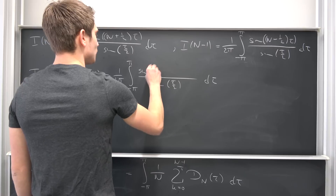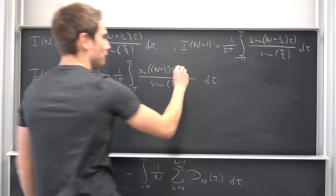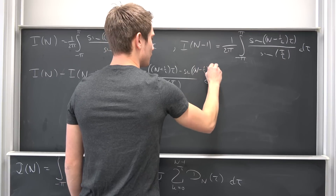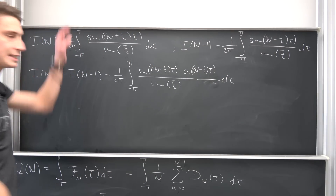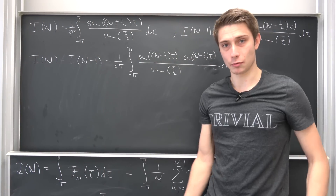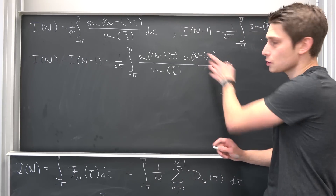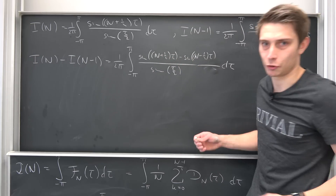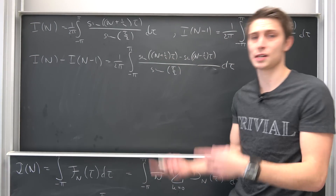And then we have this chunk: the sine of (n plus one-half) times tau, minus the sine of (n minus one-half) times tau. I have derived a certain addition formula to derive the Fejér kernel in the first place, and we can make use of it here. If you have the difference sine(a) minus sine(b), it gives us 2 times sine of (a minus b)/2 times the cosine of (a plus b)/2.